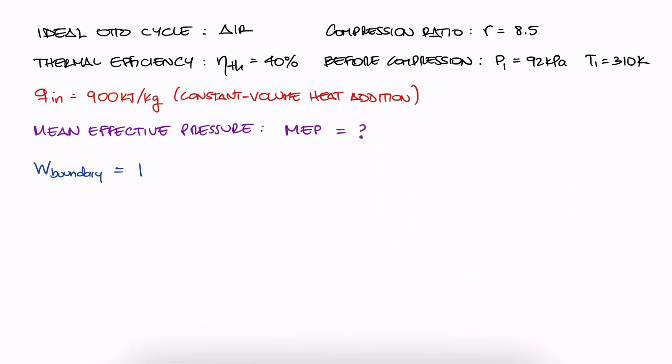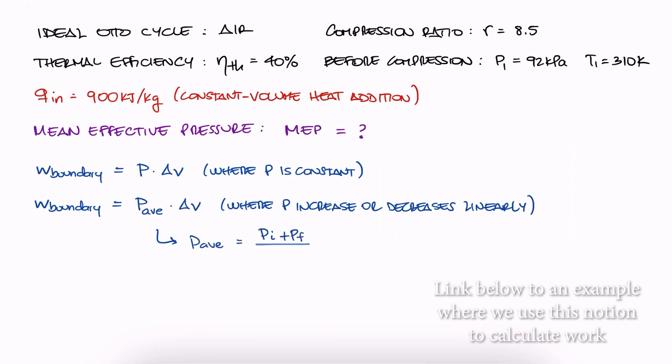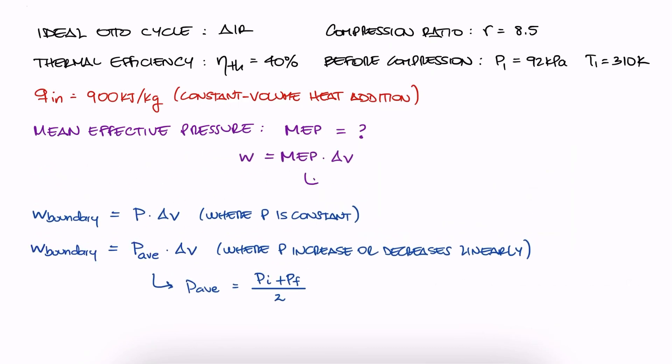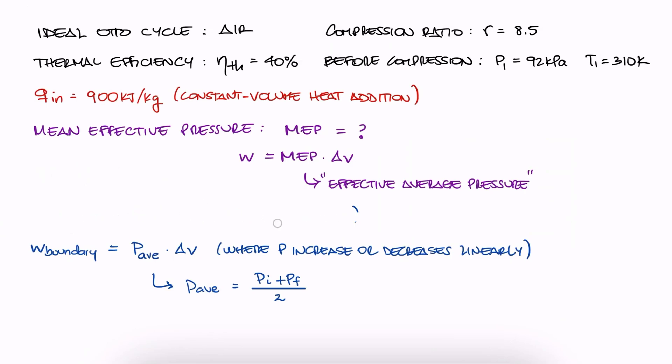Since the specific boundary work of a system at constant pressure can be calculated as the pressure times delta V, and this can also be used for systems where the pressure increases or decreases linearly by using the average pressure, what this term is looking for is that effective average pressure.